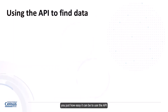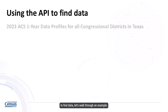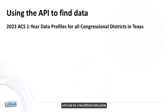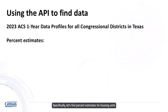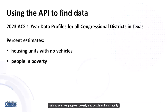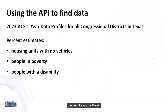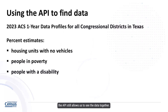To show you just how easy it can be to use the API to find data, let's walk through an example. Let's look for a few different data points using the 2023 ACS one-year data profiles for all congressional districts in Texas. Specifically, let's find percent estimates for housing units with no vehicles, people in poverty, and people with a disability. One great thing about the API is that even if each of these data points comes from a different table, the API still allows us to see the data together.